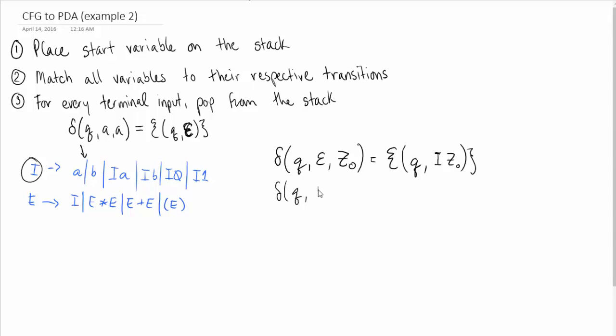We've got our favorite epsilon transition, and we have our variable I. And I has a transition A, has a transition B, has a transition IA.